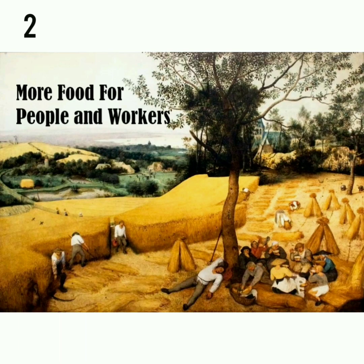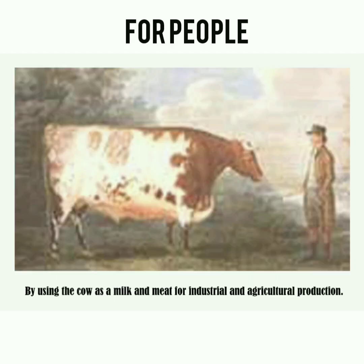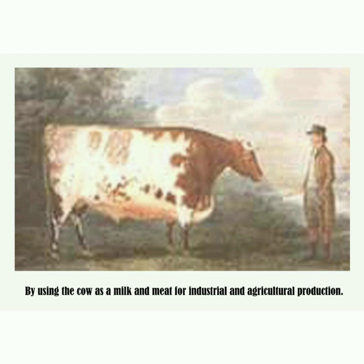Second, more food for people and workers. More animal power was available to English farmers than to their counterparts elsewhere. Coal was also used as fuel for industrial and agricultural production.